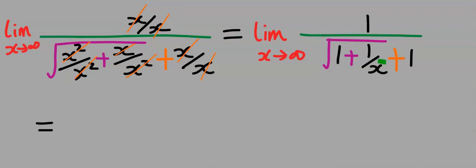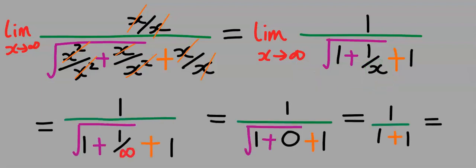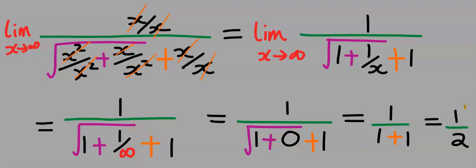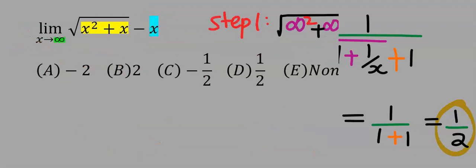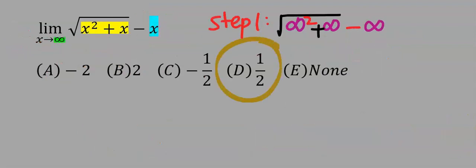Next, we take the limit of this function — we replace x with infinity. Substituting infinity: 1 over infinity is 0, and 1 plus 0 is 1. Our answer is 1 over 2, and from the options our answer is D.